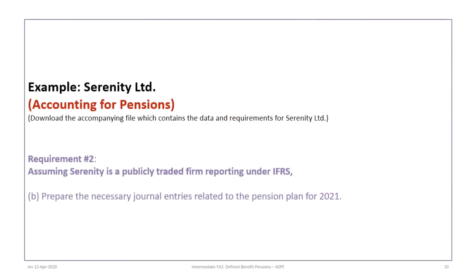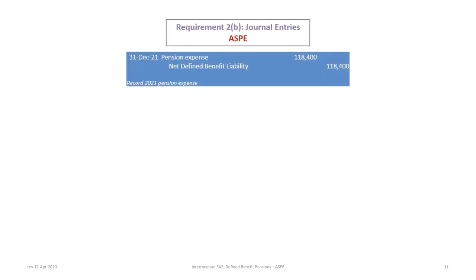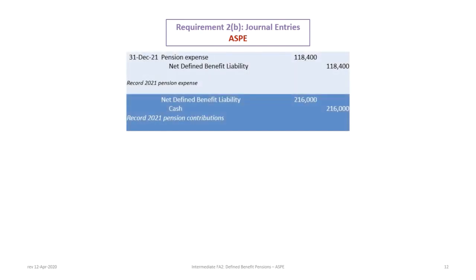The next step is to record the journal entries. To record the journal entries under ASPE, conceptually no different from what we saw under IFRS, with one exception: there is no OCI. So we simply debit pension expense $118,400 and credit the net defined benefit liability $118,400. The second journal entry records the pension contributions: debit the pension liability for $216,000 and credit cash. This was the same as in tutorial 10a — no difference from IFRS.